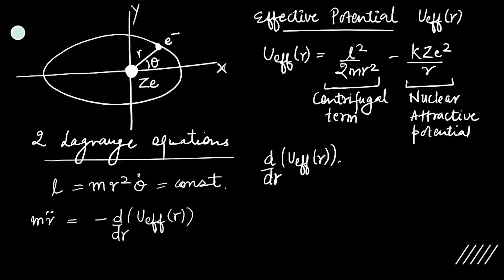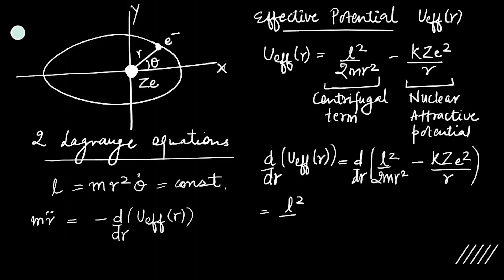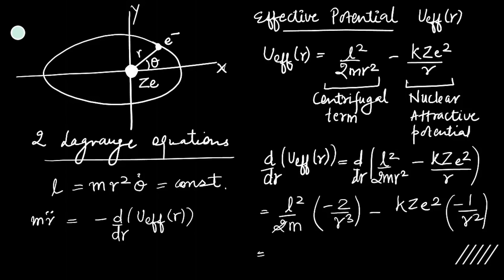We first have to find d/dR of U_effective as a function of R. Taking the constants out: L²/(2m) times the differentiation of 1/R² gives -2/R³, and the differentiation of 1/R gives -1/R². So we get d/dR(U_eff) = -L²/(mR³) + KZe²/R².